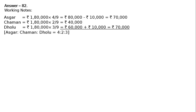Rs. 10,000 will be added to Dholu's share to make it Rs. 70,000, and Rs. 10,000 will be deducted from Oskar's share to make it Rs. 70,000. Why? Because, if you read the question properly, Dholu's share of profit excluding interest on capital but including salary is guaranteed to be a minimum of Rs. 1,10,000.